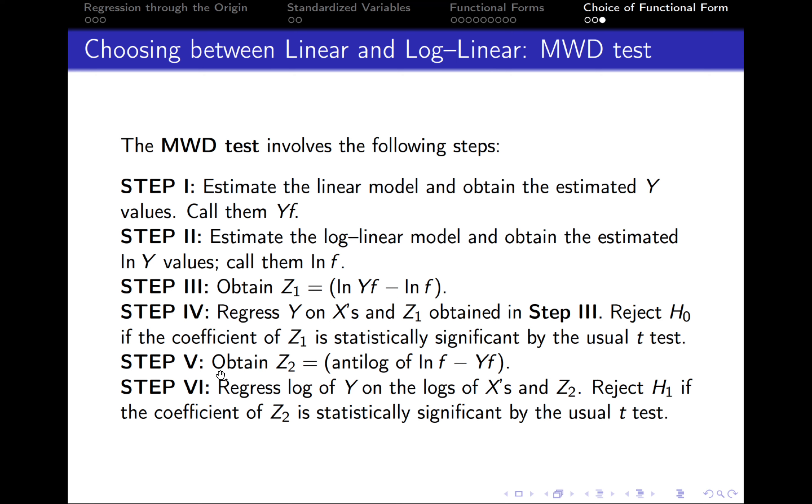After this, we move to the fifth step. We need to obtain Z2, and it is constructed in the following way. We take the antilog of ln f, so the variable from the second step, and we subtract the values of the variable from the first step, Yf.